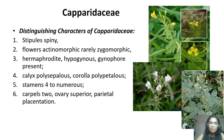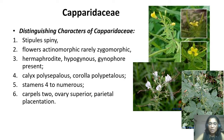So Capparaceae — we are going to study the distinguishing characters of this family. These plants are stipulate and a very typical character is that stipules are spiny. Flowers are actinomorphic, and rarely zygomorphic. Actinomorphic flower is an important feature. Bisexual or hermaphrodite. Hypogynous — that is, all the floral whorls are above the ovary. Gynophore is present, which is a very, very important character. Gynophore means carpels have a stalk.